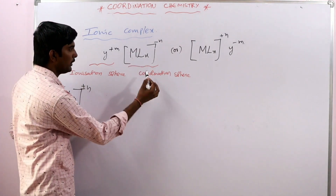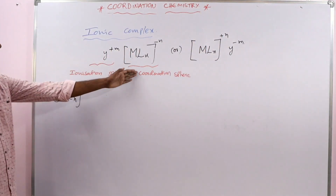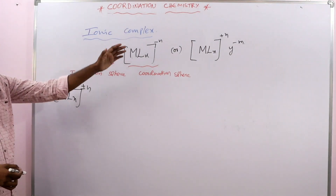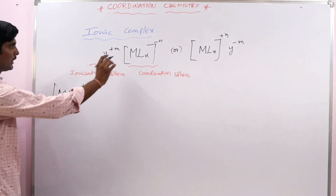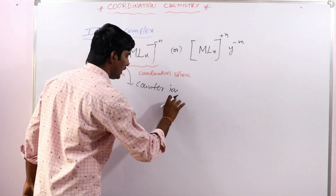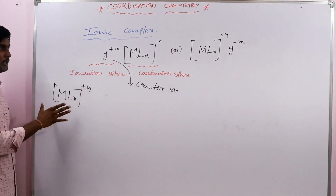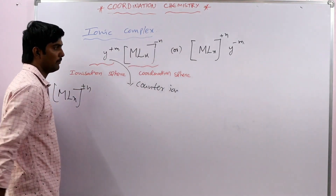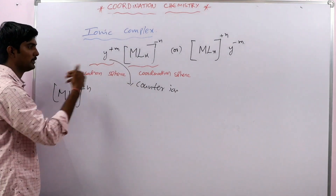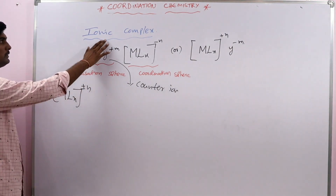The coordination sphere may be present in the anionic position or in the cationic position. The ions present outside of the coordination sphere — that is, in the ionization sphere — are called counter ions. So, a normal complex contains only a coordination sphere, while an ionic complex contains both a coordination sphere and an ionization sphere. The ions in the ionization sphere are the counter ions.